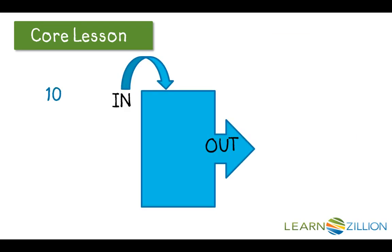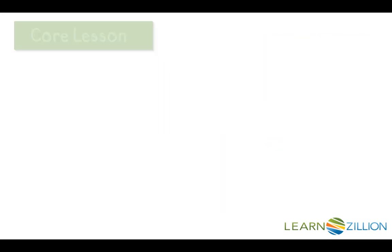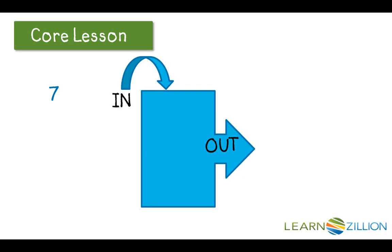Let's try another one. In goes 10, out comes 5. Let's chart that. In goes 7, out goes 2. Another entry on our chart. They're getting smaller this time. In goes 12, out goes 7.